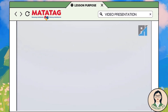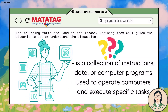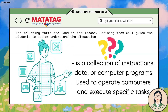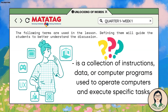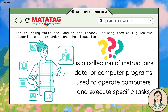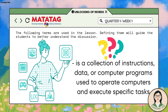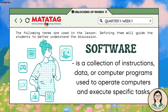Lesson purpose: to enhance your understanding of programming and ICT tools, let's watch a video. Unfortunately, I cannot play the video here due to copyright infringement. Unlocking content vocabulary — let's define key terms that will help guide our discussion. It is a collection of instructions, data, or computer programs used to operate computers and execute specific tasks. The answer is software. Very good.